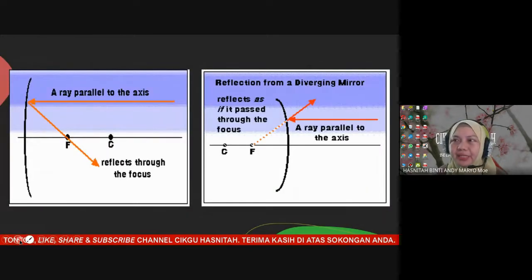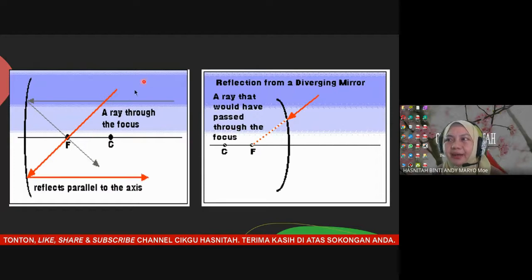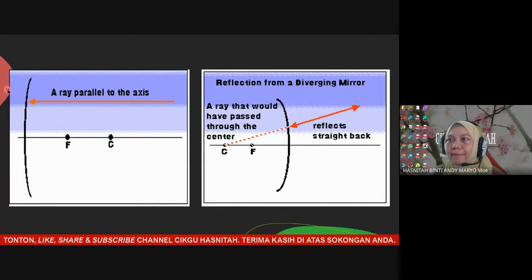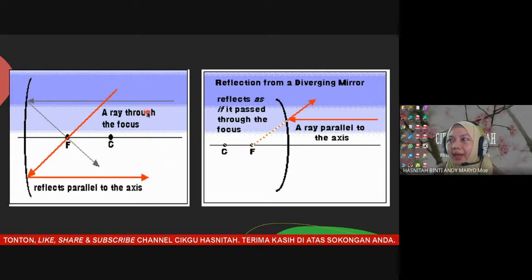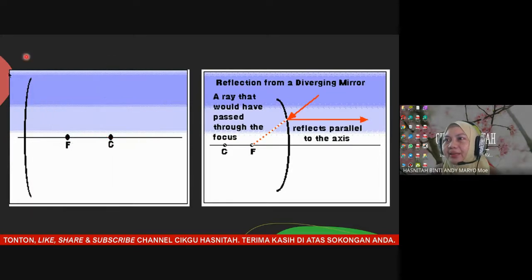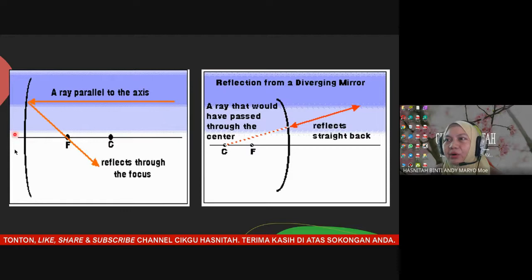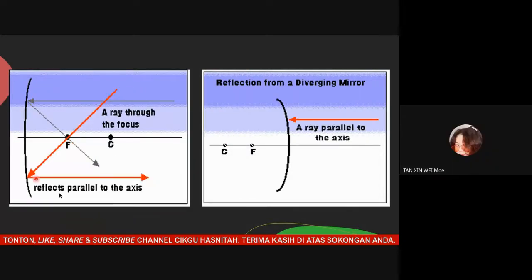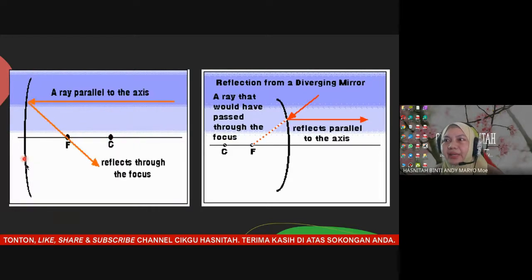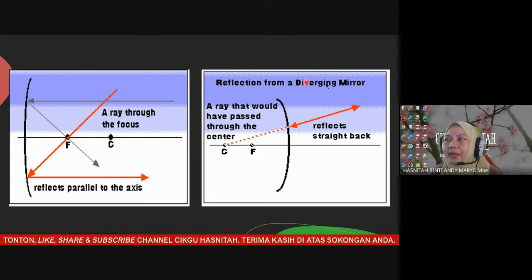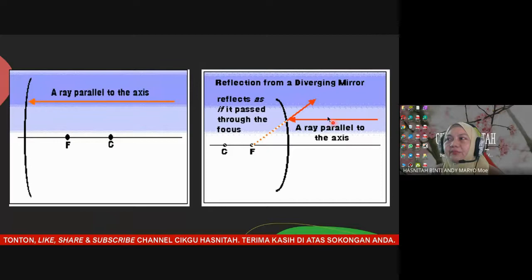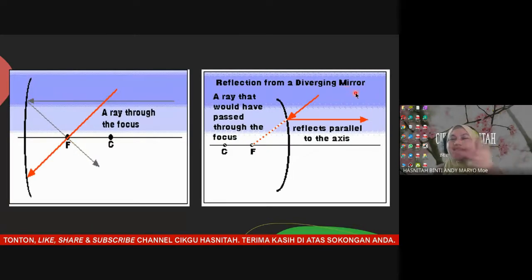Now let's practice. Before practicing, observe this animation showing image formation for both convex and concave mirrors. The mirror on the left is concave — the light comes in and the shape is concave. The mirror on the right is convex — the front part where light comes from has a convex shape.